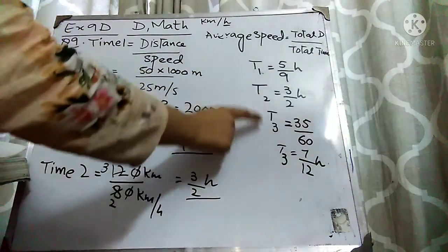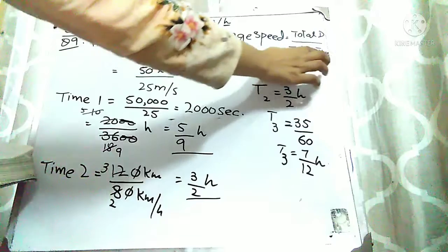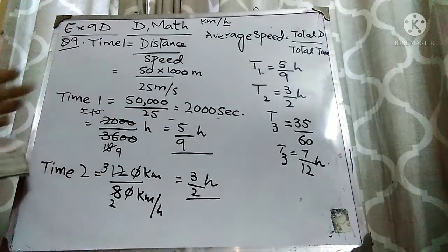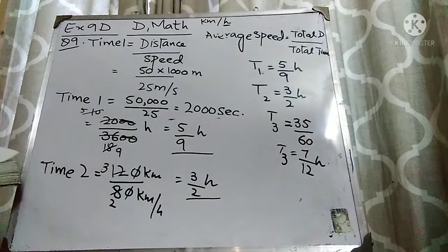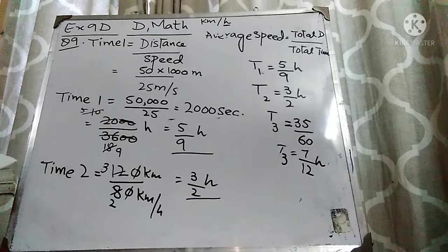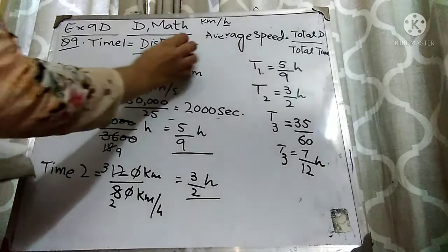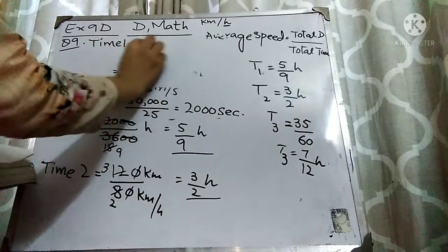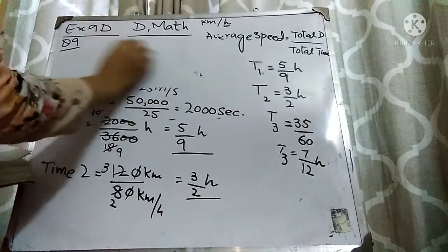Now we know T1, T2, and T3, so we can put these three times into the formula. But we know Distance 1 and Distance 2 — Distance 3 is still missing — so now we are going to find Distance 3.